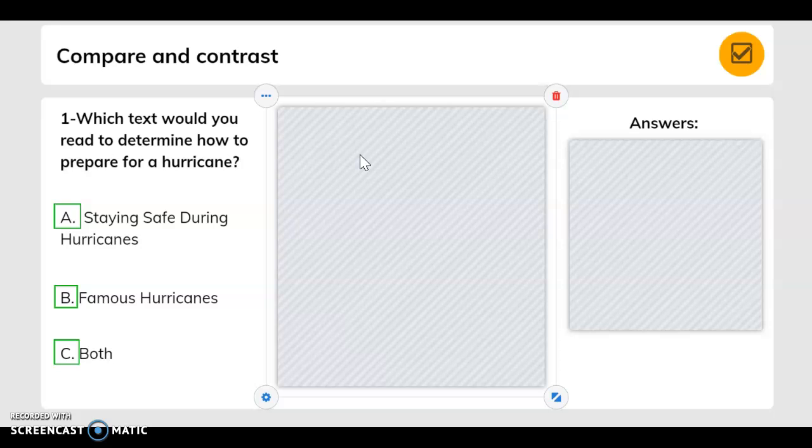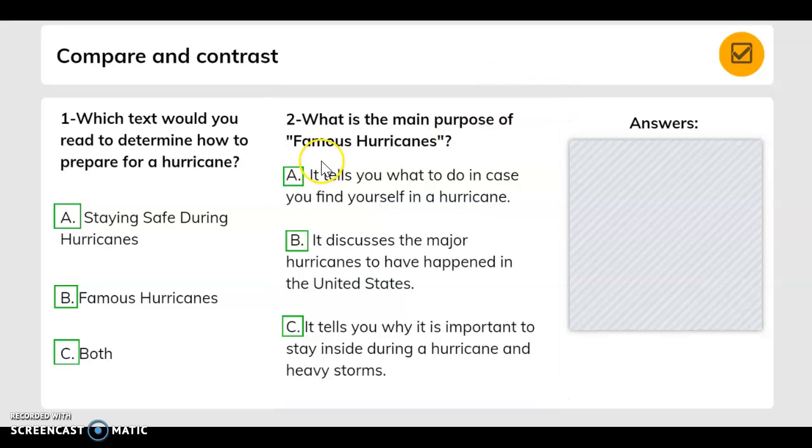Compare and contrast. Which text would you read to determine how to prepare for a hurricane? For question one, they gave us the option of A, staying safe during hurricanes, B, Famous Hurricanes, and C, both.